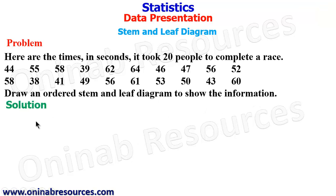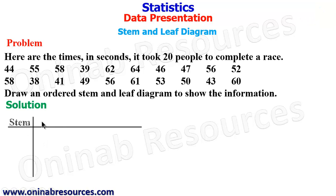In our solution to this problem, a stem and leaf diagram has two columns. We have the two columns here where the first column represents the stem and the second column represents the leaf. In this information we have here, we have two-digit numbers.